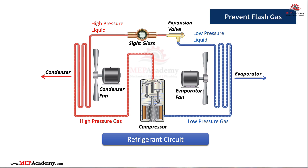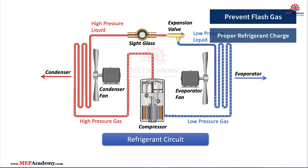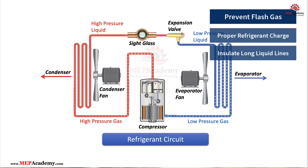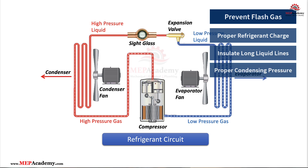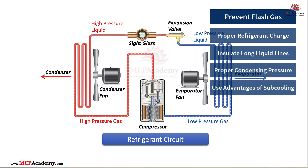To prevent flash gas where it shouldn't be, follow these best practices: 1. Ensure proper refrigerant charge. 2. Insulate long liquid lines in hot environments. 3. Keep condensing pressures within design range. 4. Use subcooling to your advantage.